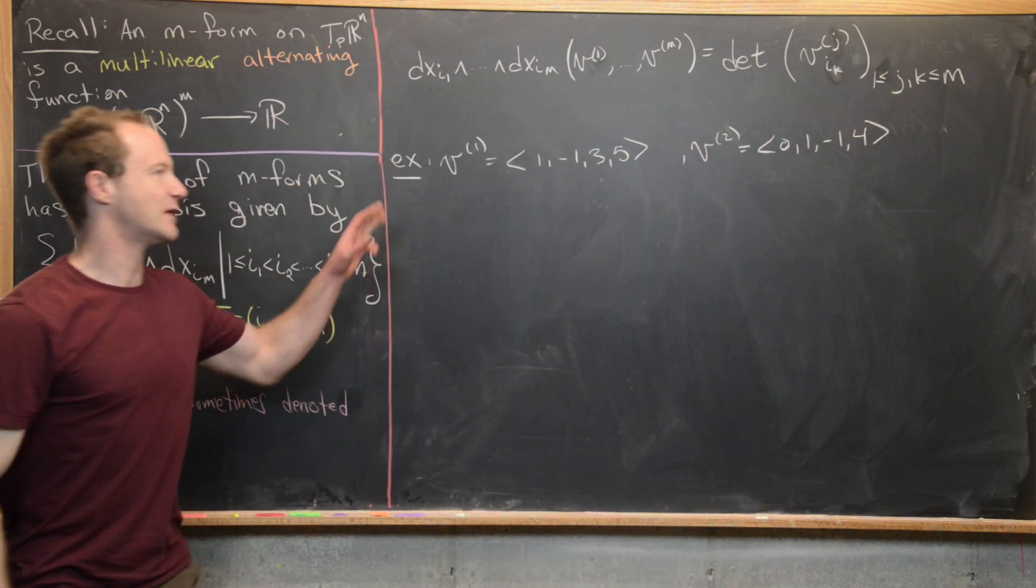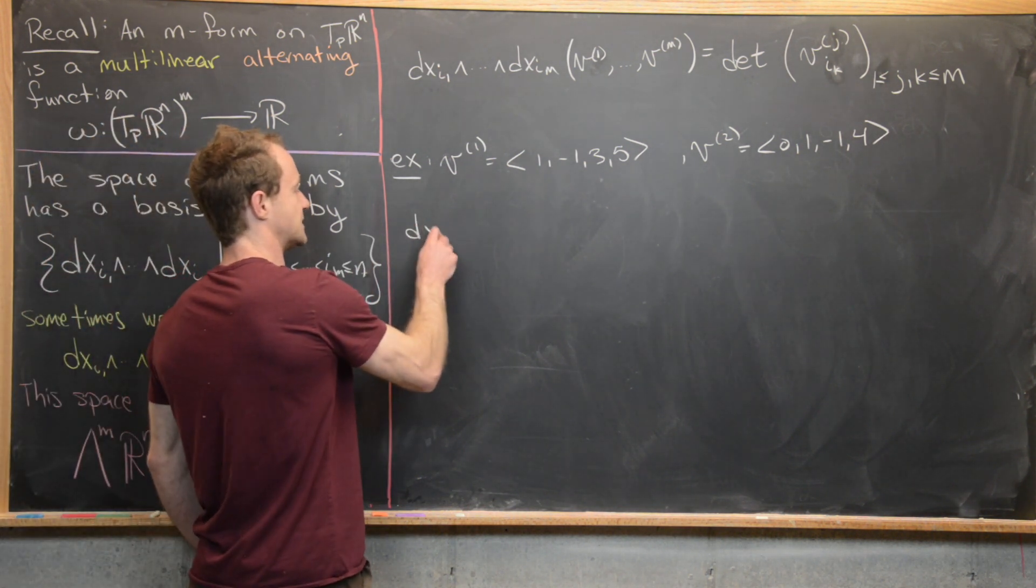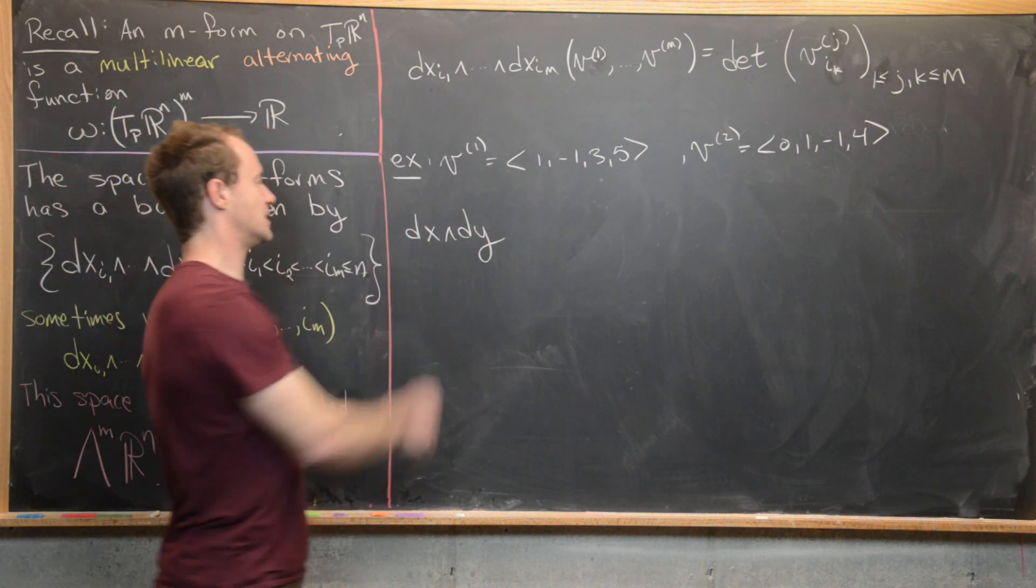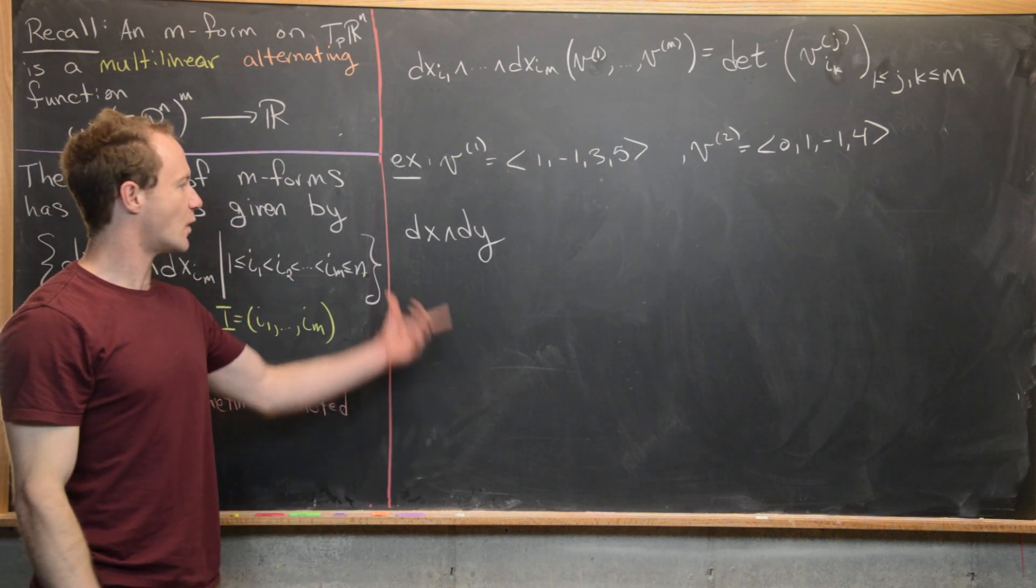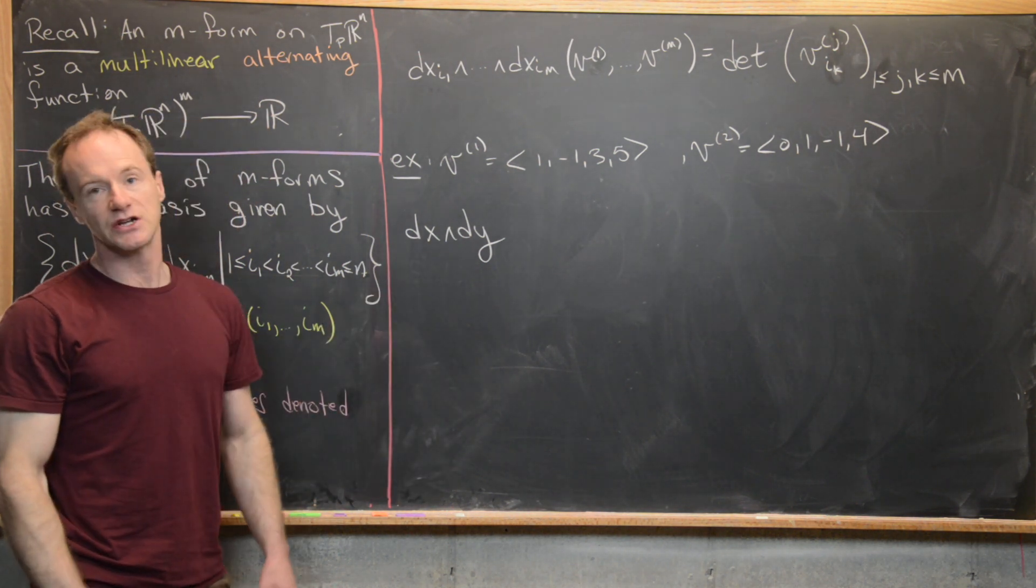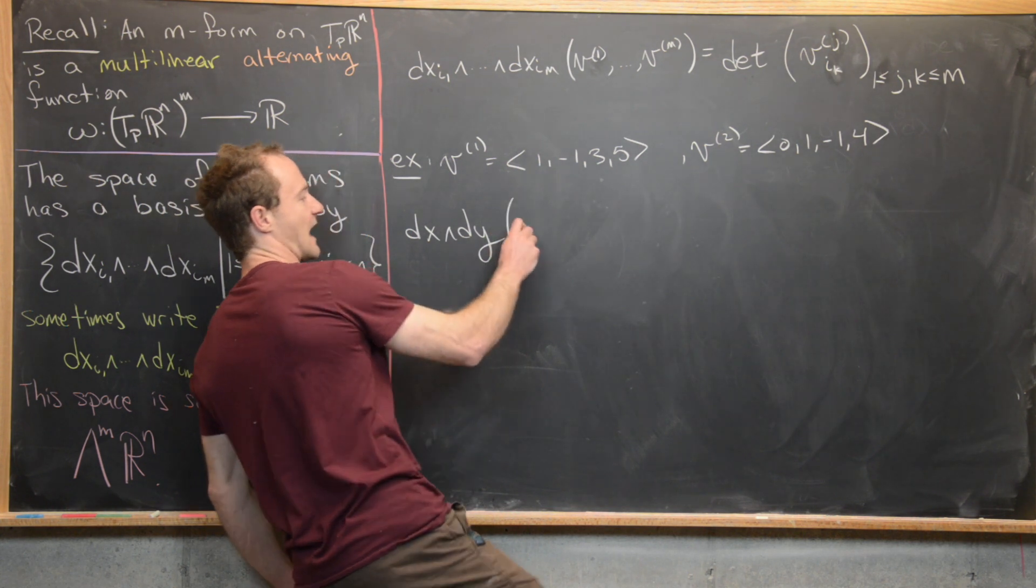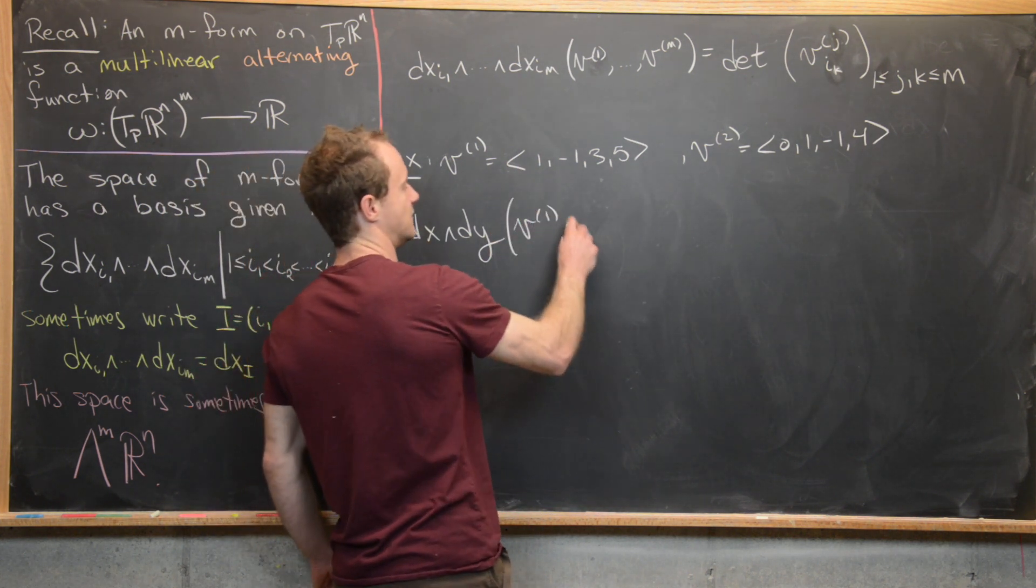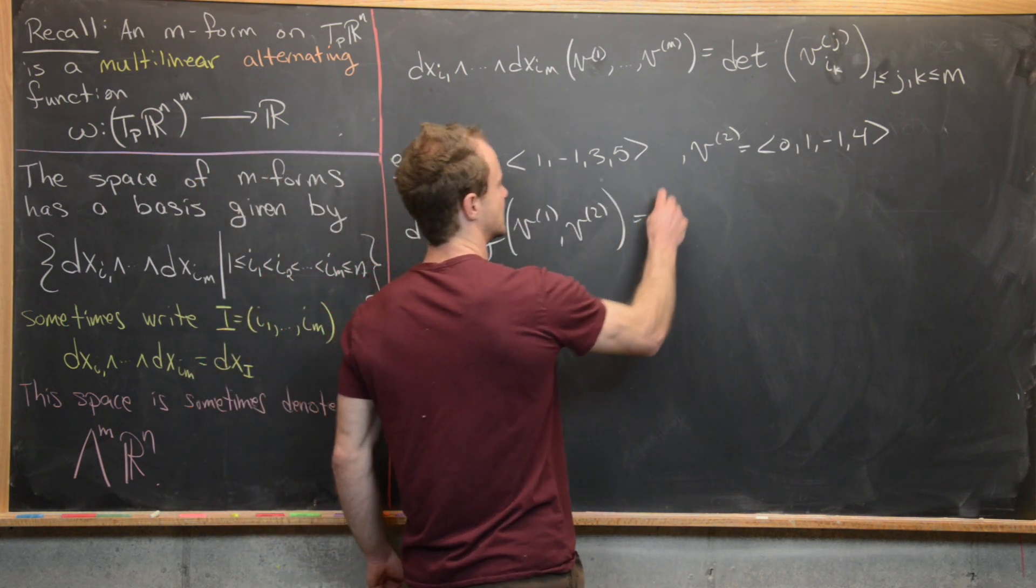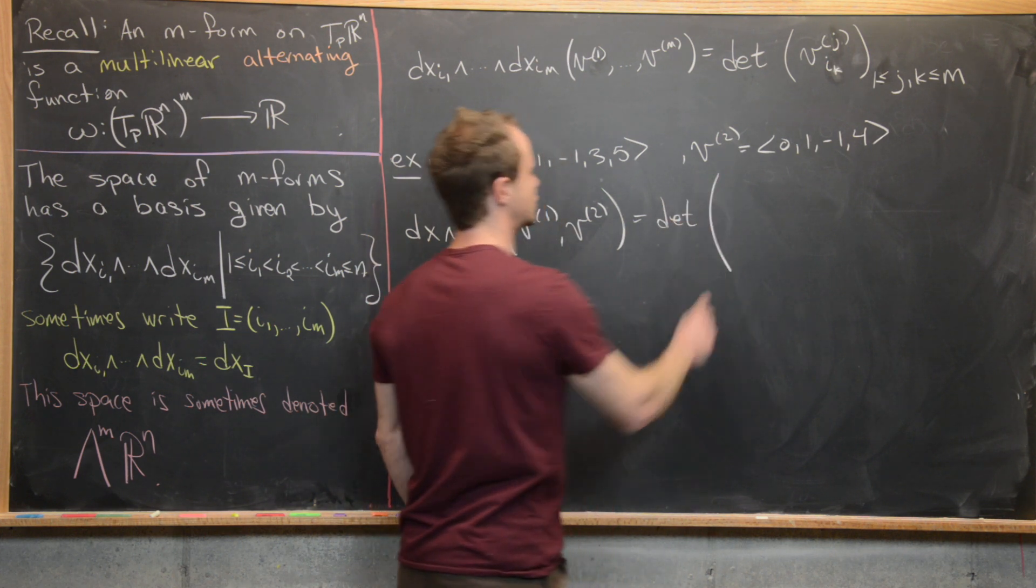And then let's say we have a 2 form, so maybe for the purposes of illustration we'll do a couple, but let's say we have DX wedge DY, so that's one of these elementary 2 forms. And let's say that that acts on the vector V1, V2.